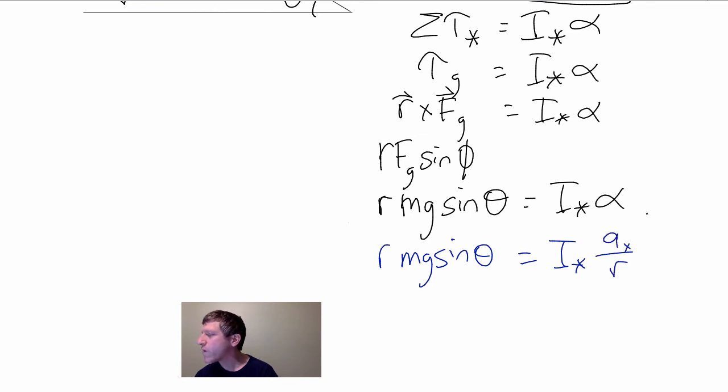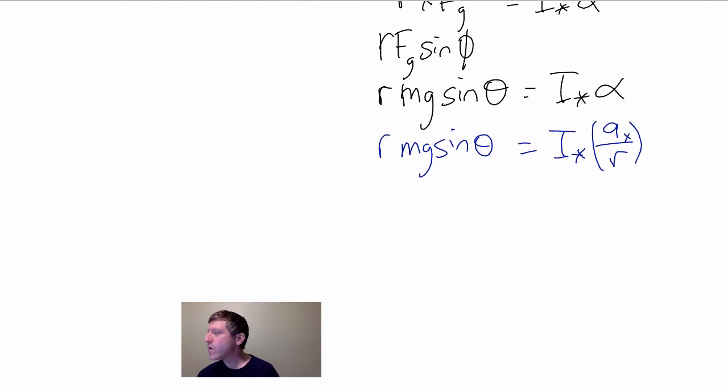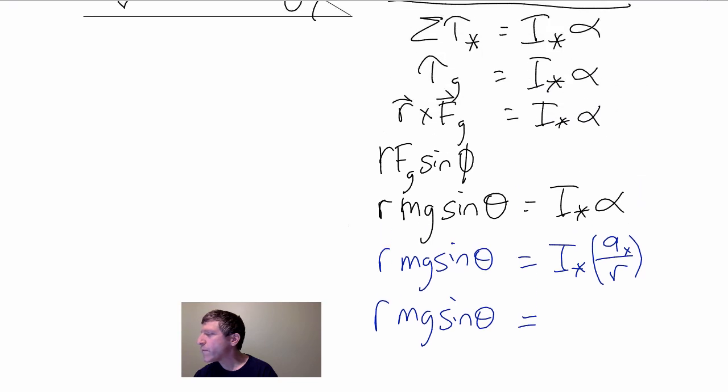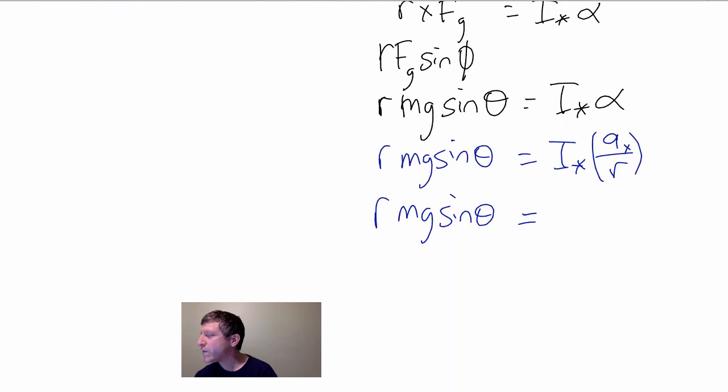We get to use this AX over R thing again. Almost every time, we will replace alpha by A over R. And notice that, let's do one more step. M G sine theta equals, this is going to be, as we found before, around the star axis, it's 7/5 M R squared.